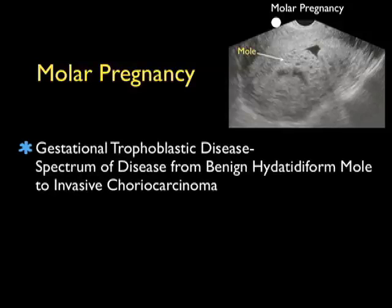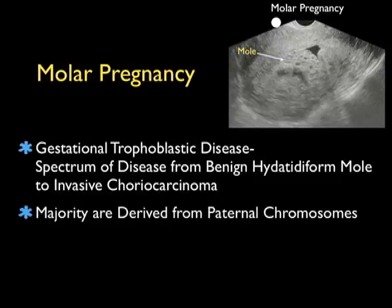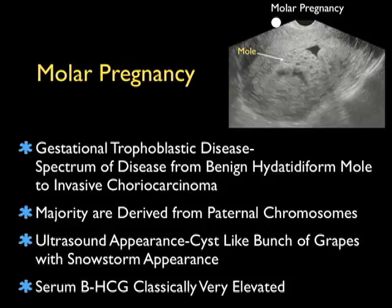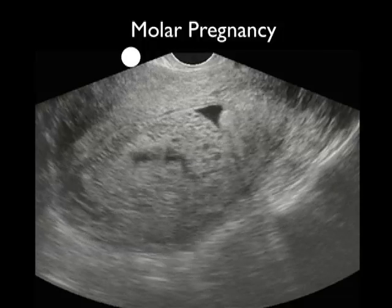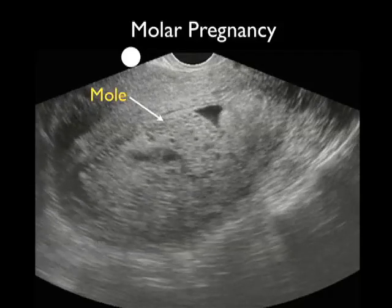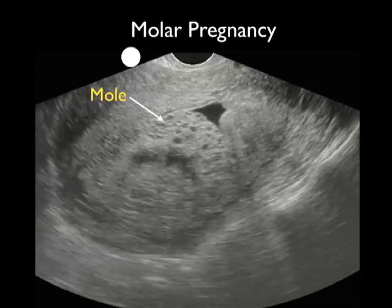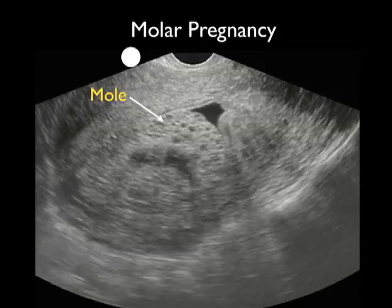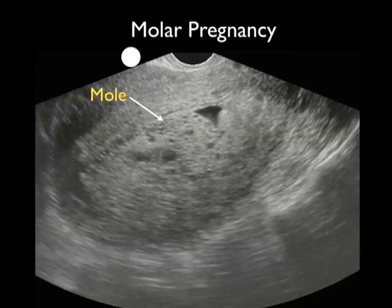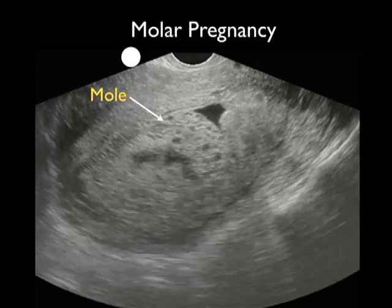I'd like to conclude this module with another form of abnormal pregnancy: a molar pregnancy, which is a form of gestational trophoblastic disease. Gestational trophoblastic disease ranges from a benign hydatidiform mole to invasive choriocarcinoma, a form of metastatic disease. The majority are derived from paternal chromosomes with no maternal chromosomes in the embryo. The ultrasound appearance is a cyst-like bunch of grapes with a snowstorm-type appearance, and classically the serum beta-HCG will be very elevated. Here's video from a patient who presented with uncontrolled hypertension, vaginal bleeding, and pain. We see the presence of a molar pregnancy in the fundal region of the uterus with a cyst-like appearance — very different from a normal intrauterine pregnancy. Scanning back and forth, it almost looks like a bunch of grapes within the fundus of the uterus, leading to a diagnosis of molar pregnancy and an immediate OBGYN consultation.